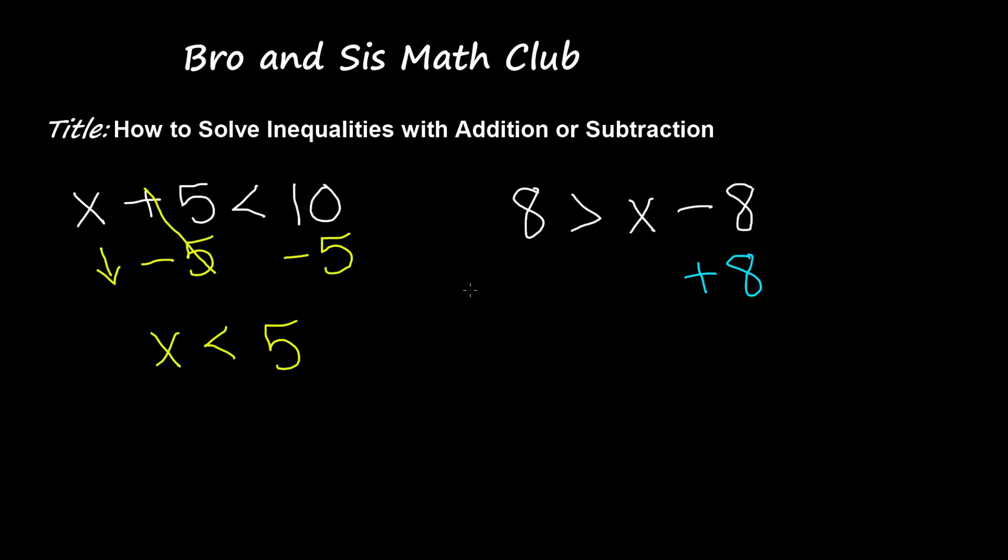So positive 8 and positive 8 on both sides. Negative 8 and positive 8 cancel each other out, leaving x. So x is less than 16 since 8 plus 8 is equal to 16.